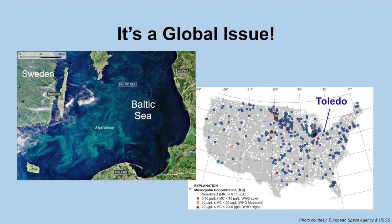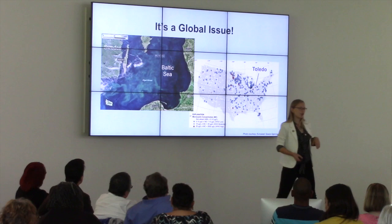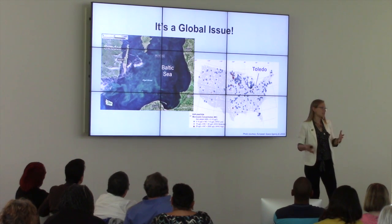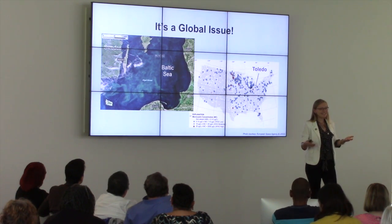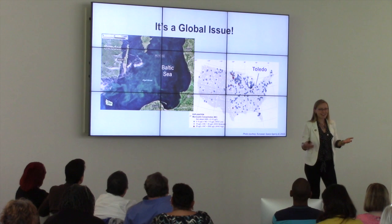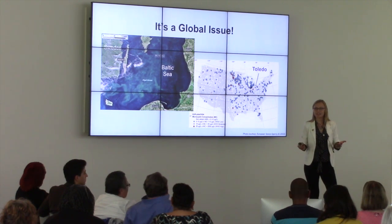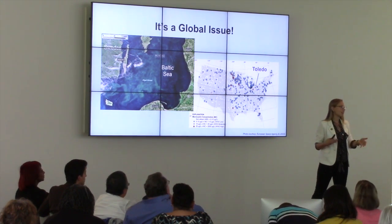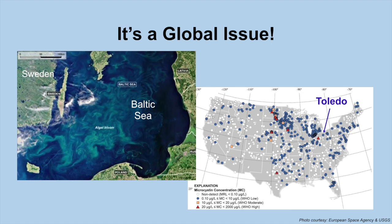A lot of people think that maybe it's just a Maumee issue, maybe just a Toledo issue, maybe just an Ohio issue. But it's not — it's huge. The Baltic Sea, just like Lake Erie, experiences this same occurrence every year. About every late summer we have lots of algae over in the Baltic Sea, and again it's caused from agricultural fertilizers. We have too much phosphorus.